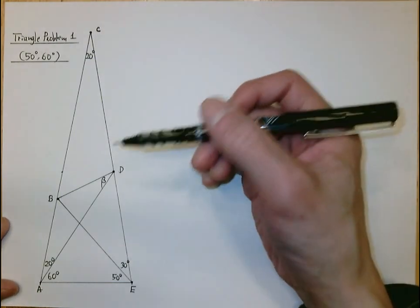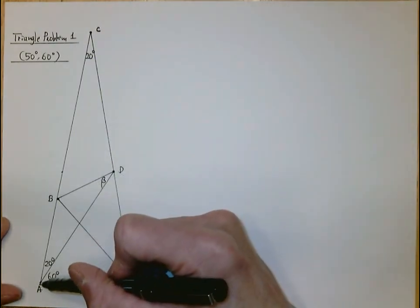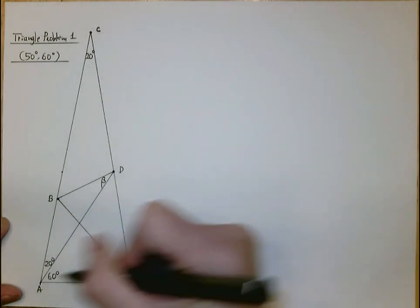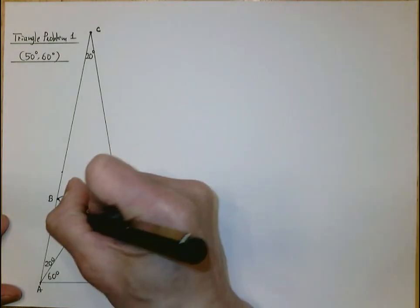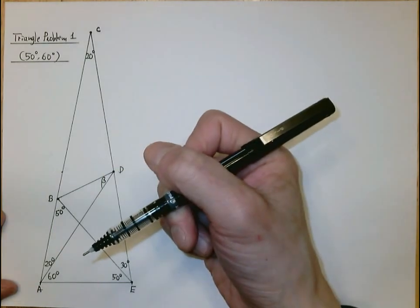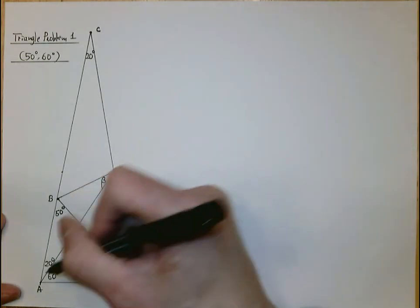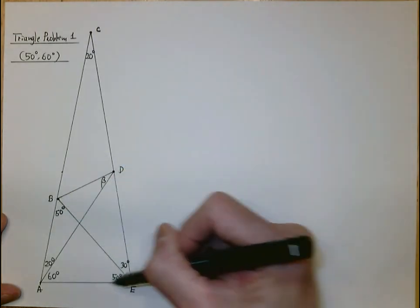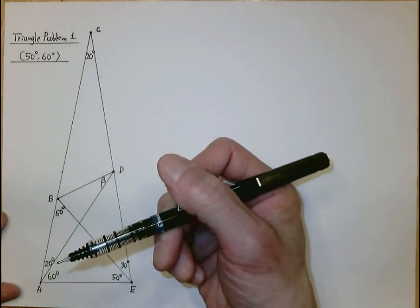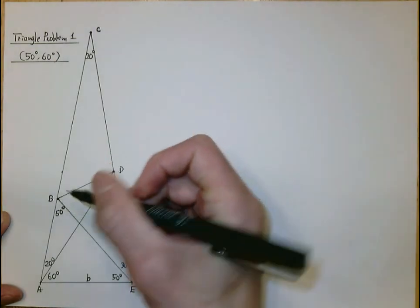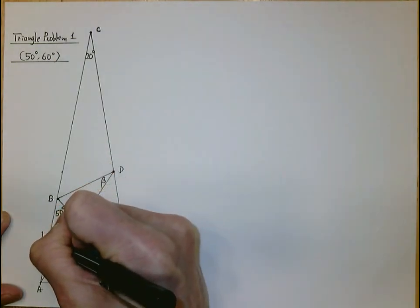Next we look at triangle ABE. It has 50 degrees and 80 degrees, which makes the third angle 50 degrees, since the sum of angles is 180 degrees: 50, 50, and 80. That means triangle ABE is isosceles with AB congruent to AE. Let me call AE small b, which makes AB small b as well.